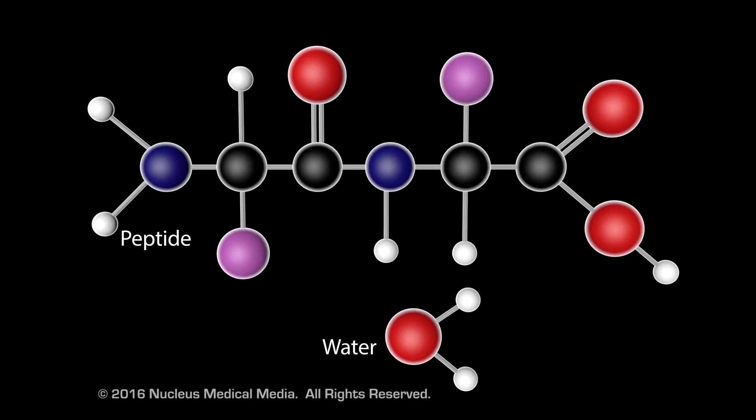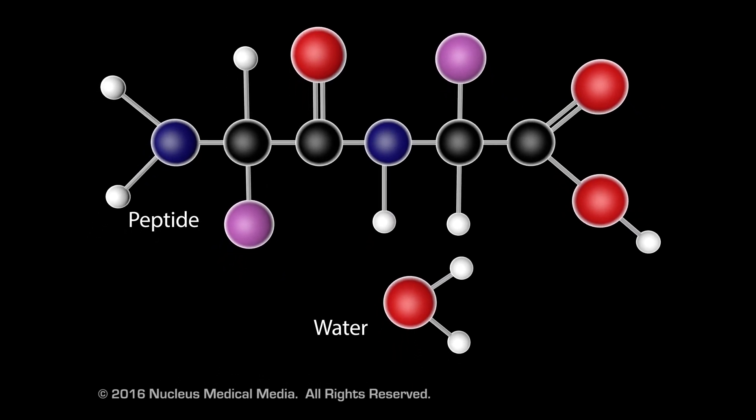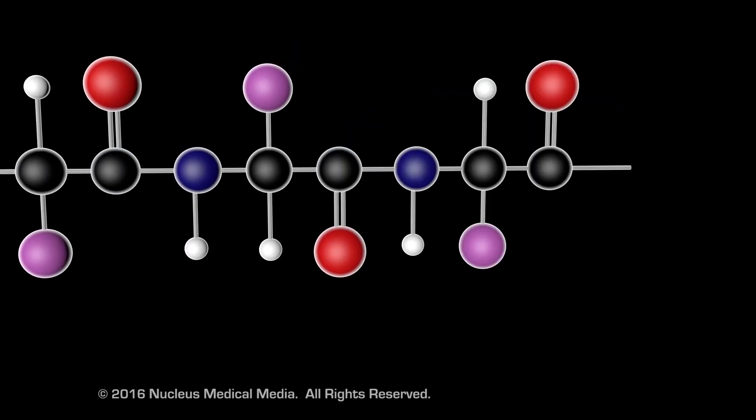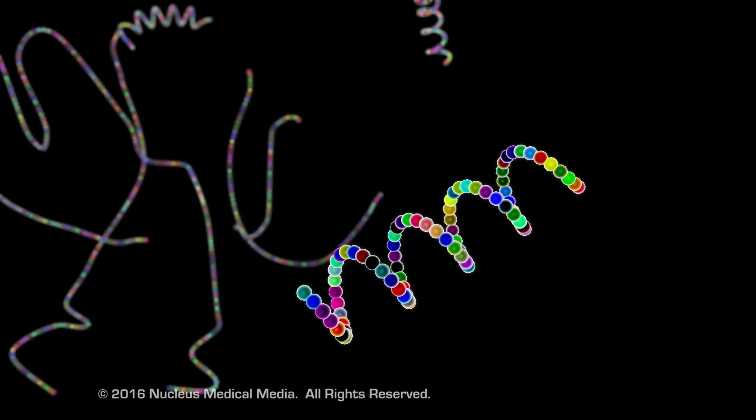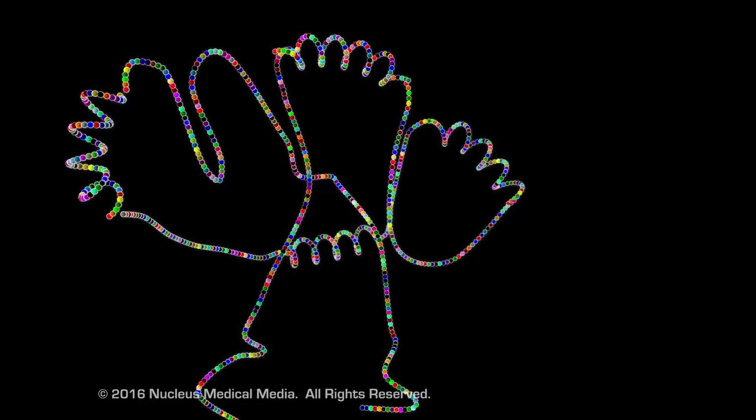Amino acids join together to form peptides. Longer chains of amino acids are called polypeptides. Groups of polypeptides join to form proteins.